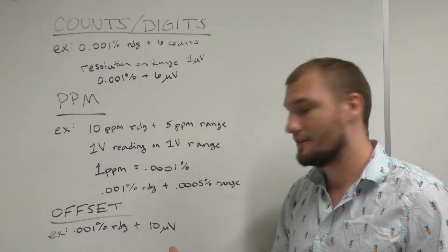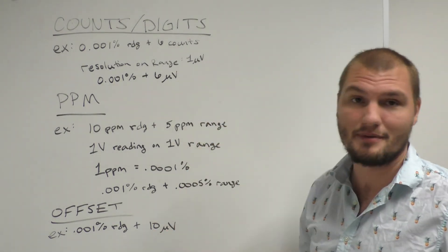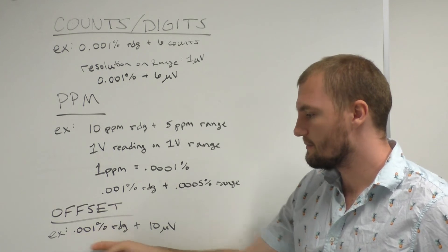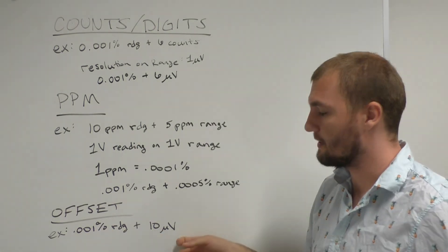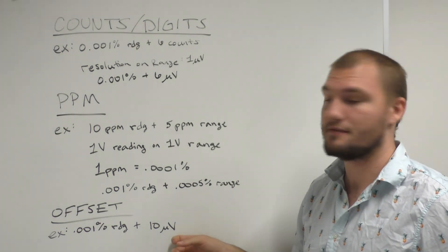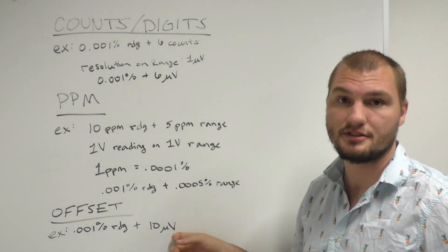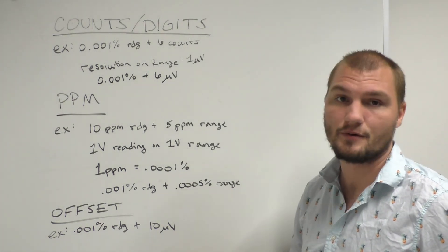Finally, there's offset, this is the easiest of all of them. It's essentially the count system, but we do the math for you. So you're going to do the reading percentage like normally, except you're going to just add the 10 microvolts at the end. So it's the same as if we had a 1 microvolt resolution with 10 counts. We just do the math for you.